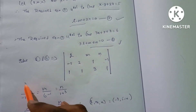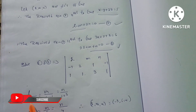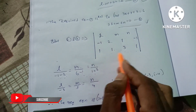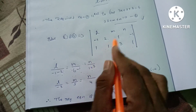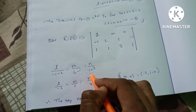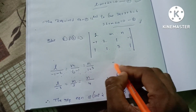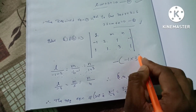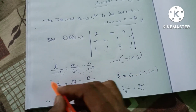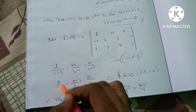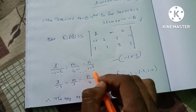Computing via cross-multiplication: L / [(-1)(1) - (1)(2)] equals M / [(2)(3) - (-1)(1)] equals N / [(1)(1) - (-1)(3)]. Simplifying: L / (-1 - 2) = M / (6 - 1) = N / (1 + 3), giving L / (-3) = M / 5 = N / 4.